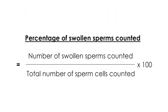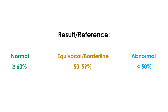Calculate the swollen sperm cells as a percentage of total sperm cells counted and report the result as percentage of swollen sperms. Based on this percentage, the HOS test result of the semen sample is then interpreted as normal or abnormal based on the reference values shown.